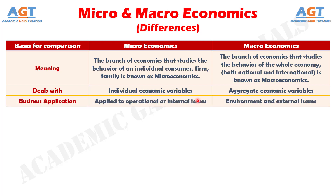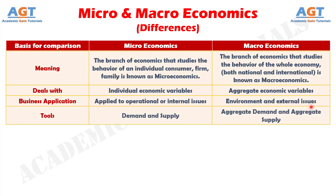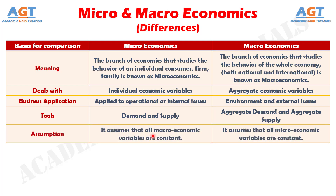Number 3: microeconomics is applied to operational or internal issues, whereas macroeconomics is applied to environment and external issues. Number 4: demand and supply are tools of microeconomics, whereas aggregate demand and aggregate supply are tools of macroeconomics.